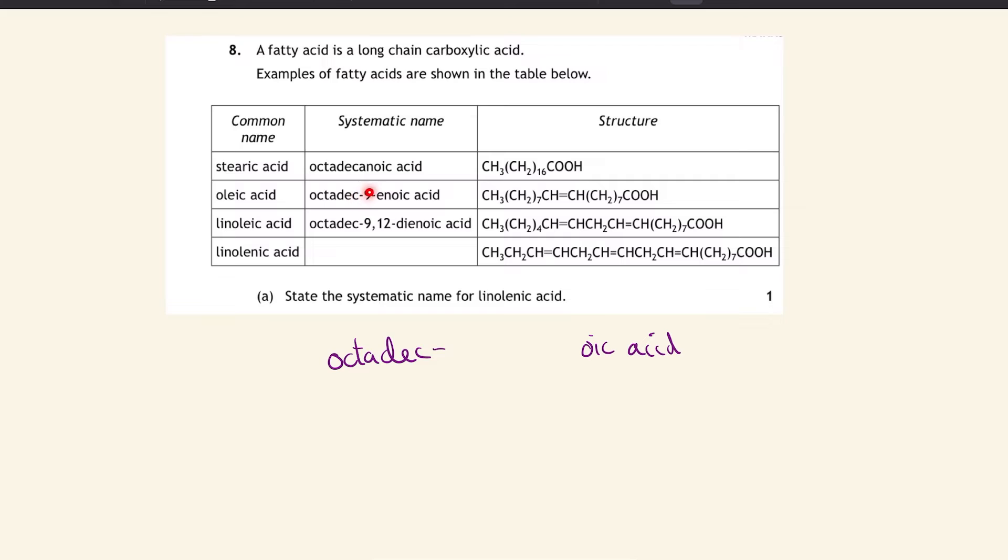Now we need to deal with the middle bit. Looking at the pattern with the numbers: this one doesn't have a number, this one has 9 with one double bond, so it's probably the number for where the double bond is. This molecule's got two double bonds and two numbers, which confirms our thinking. Our molecule has three double bonds, so it needs three numbers. This must be carbon 9 here as well.